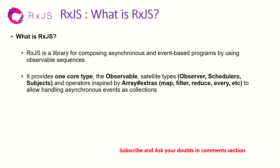RxJS is a library for composing asynchronous and event-based programs by using observable sequences. In the previous episode, we covered in detail about what is an observable, and we have seen some examples of types like observer, and we have also seen operators. These are all overview — I'm going to cover each operator, each of these in detail in coming episodes.